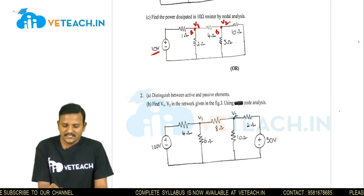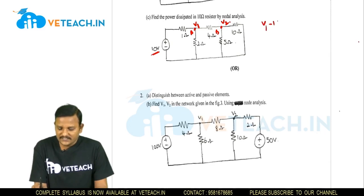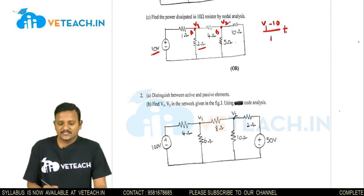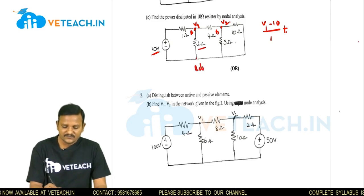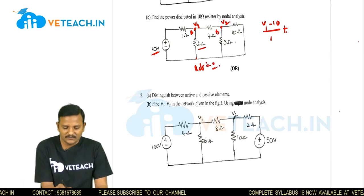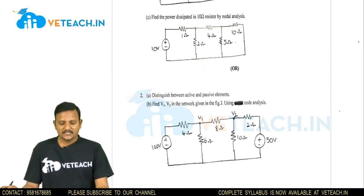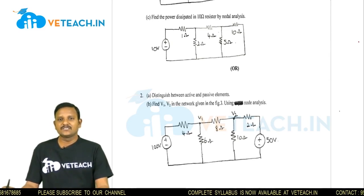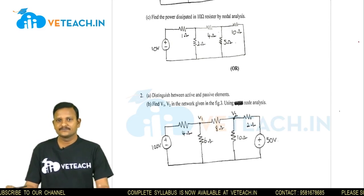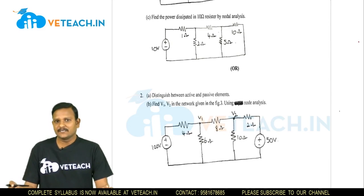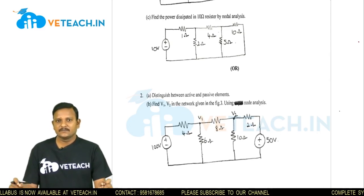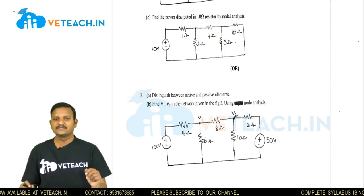Applying KCL at node A: (V1 − 10)/1 + V1/2 + (V1 − V2)/4 = 0. The 2 ohm resistor is connected between node A and the reference node (voltage = 0), and the 4 ohm connects node A to node B. Simplifying: V1(1 + 1/2 + 1/4) − V2/4 = 10, which gives 7V1 − V2 = 40. This is equation 1.